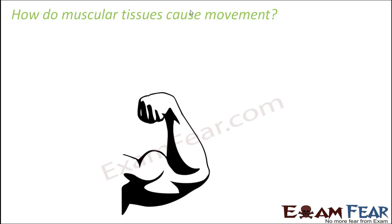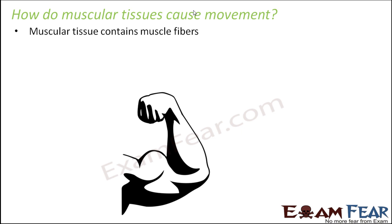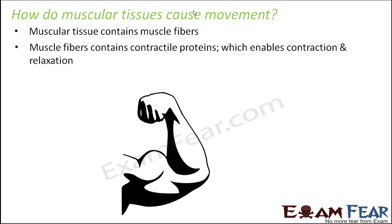How exactly do these muscular tissues cause movement, and why do muscles contract? Muscle tissues are made up of muscle fibers — thread-like structures which actually cause the contraction. These muscle fibers contain contractile proteins, a special type of protein, due to the presence of which contraction and relaxation in muscles is allowed.